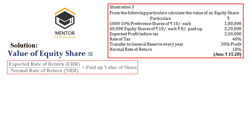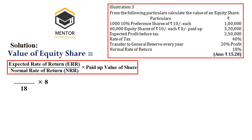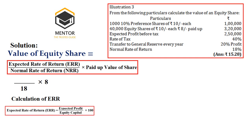When we come to the solution — value of equity share — here we don't have any information on dividend. Hence we need to apply the rate of earnings method. The formula is: expected rate of return divided by normal rate of return, into paid-up value of share. In this question, normal rate of return is 18% and paid-up value of share is Rs. 8. We don't have the expected rate of return, so we need to calculate ERR. The formula for ERR is: expected profit divided by equity capital, into 100. Equity capital is Rs. 3,20,000.